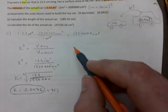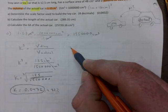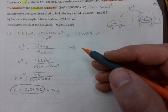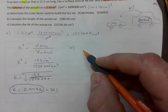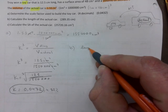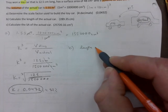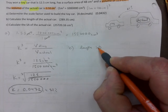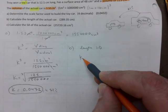We can use that to figure out the rest. For part b, it says calculate the length of the actual car. Length in this case is one-dimensional, so all we need to do is k equals length of diagram divided by the length of actual.